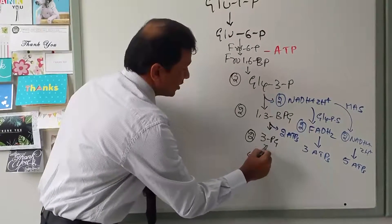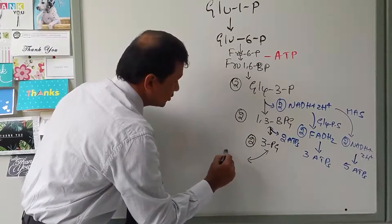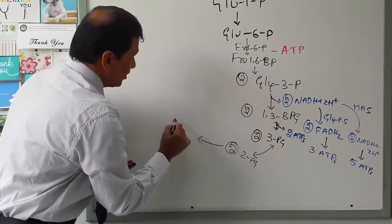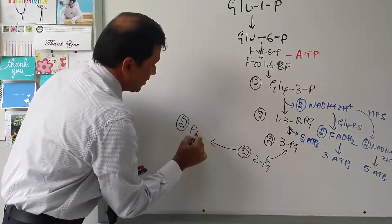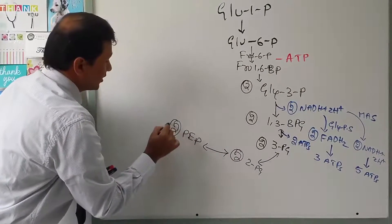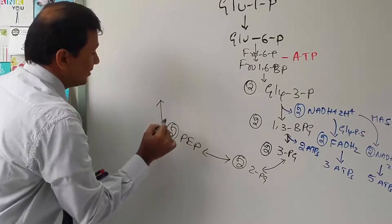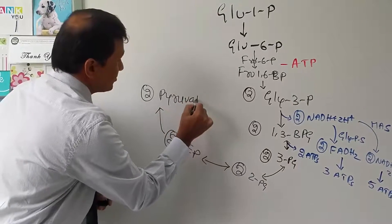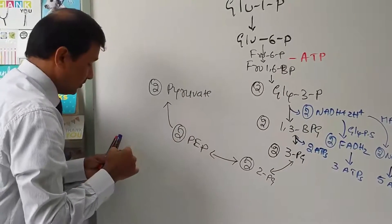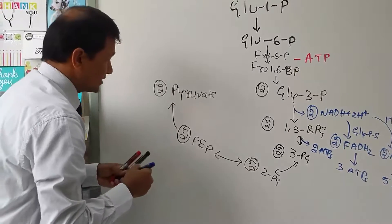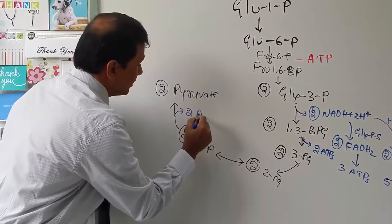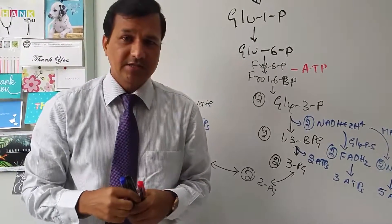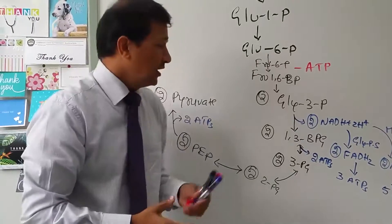The two molecules of 3-phosphoglycerate become two molecules of 2-phosphoglycerate, then two molecules of phosphoenolpyruvate, and finally two molecules of pyruvate. During the phosphoenolpyruvate to pyruvate step, pyruvate kinase produces 2 more ATPs — another example of substrate-level phosphorylation in glycolysis.